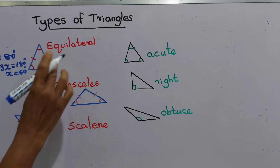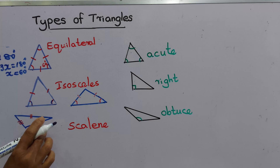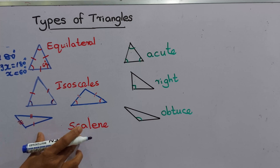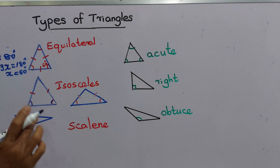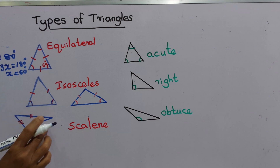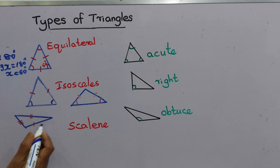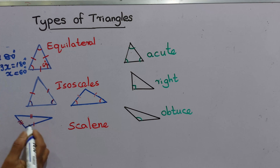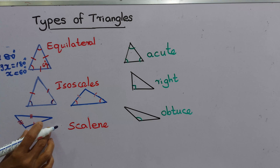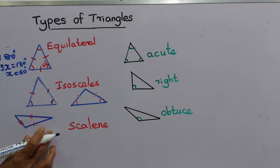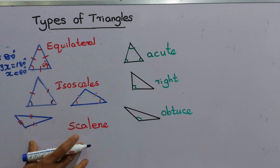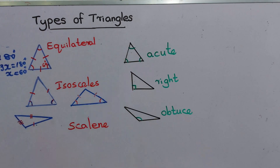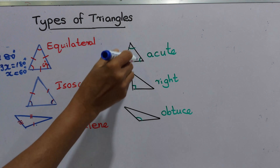Now we come to another type of triangle: the scalene triangle. In a scalene triangle, all three sides are unequal — each side has a different length. We name this type the scalene triangle. So by sides, we have separated triangles into equilateral, isosceles, and scalene.